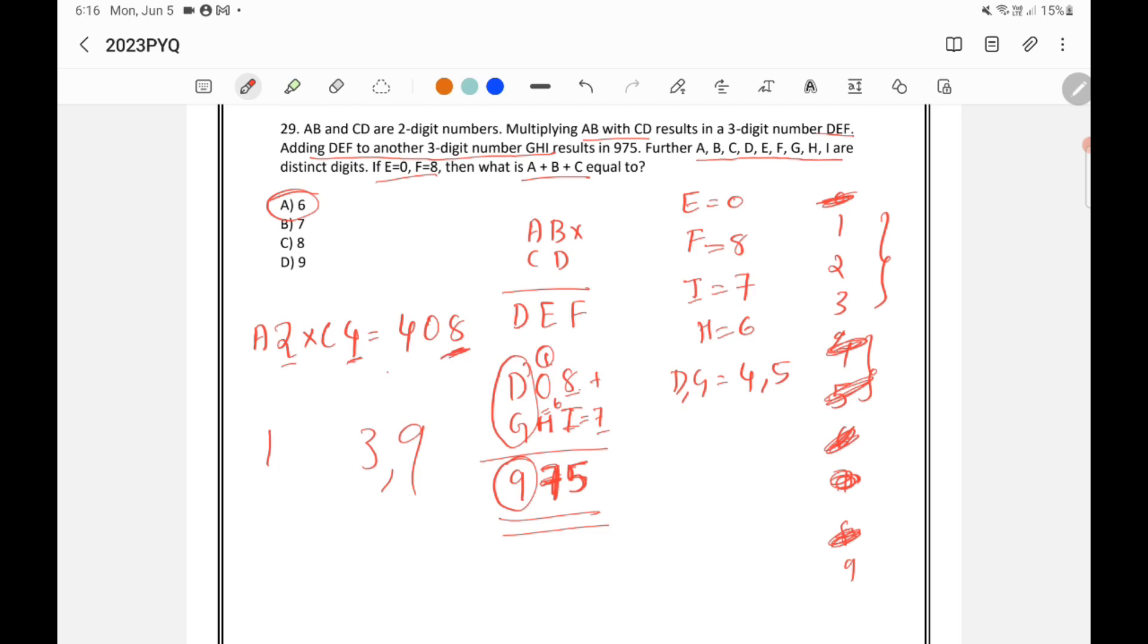So just try to put values for A and C. So just put A equal to 1, C equal to 3. Like that if you do some random calculations you can see that 12 into 34 is 408. So this is the possibility.